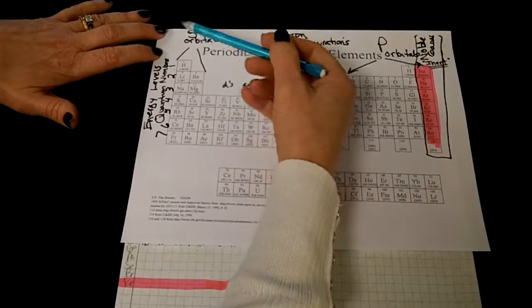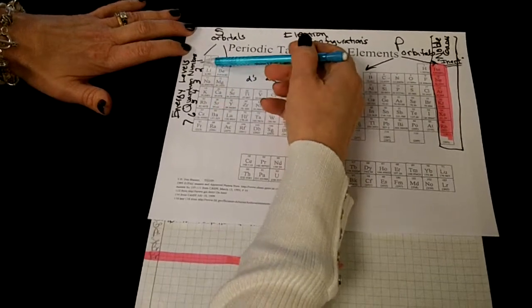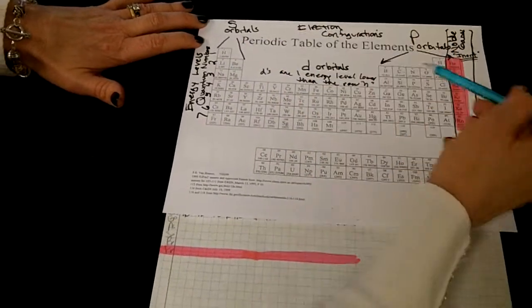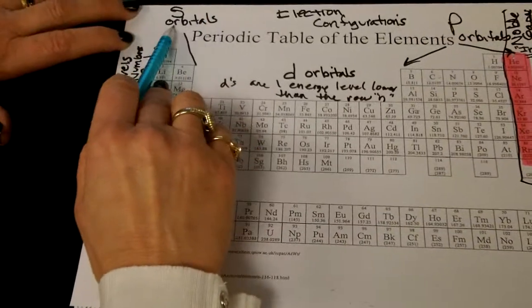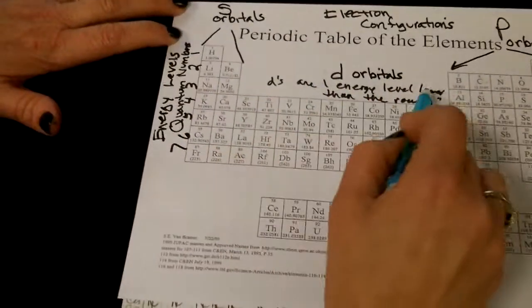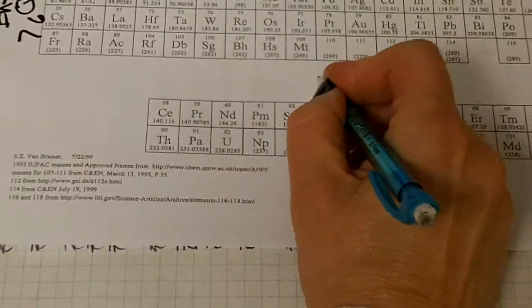So this is a periodic table, right guys? And this is showing you the principal quantum numbers, or the energy levels, which are the rows on the periodic tables. And then we have different sub-orbitals that are S's, these are D's, these are P's. And then we have F's down here, but we'll learn about those later.